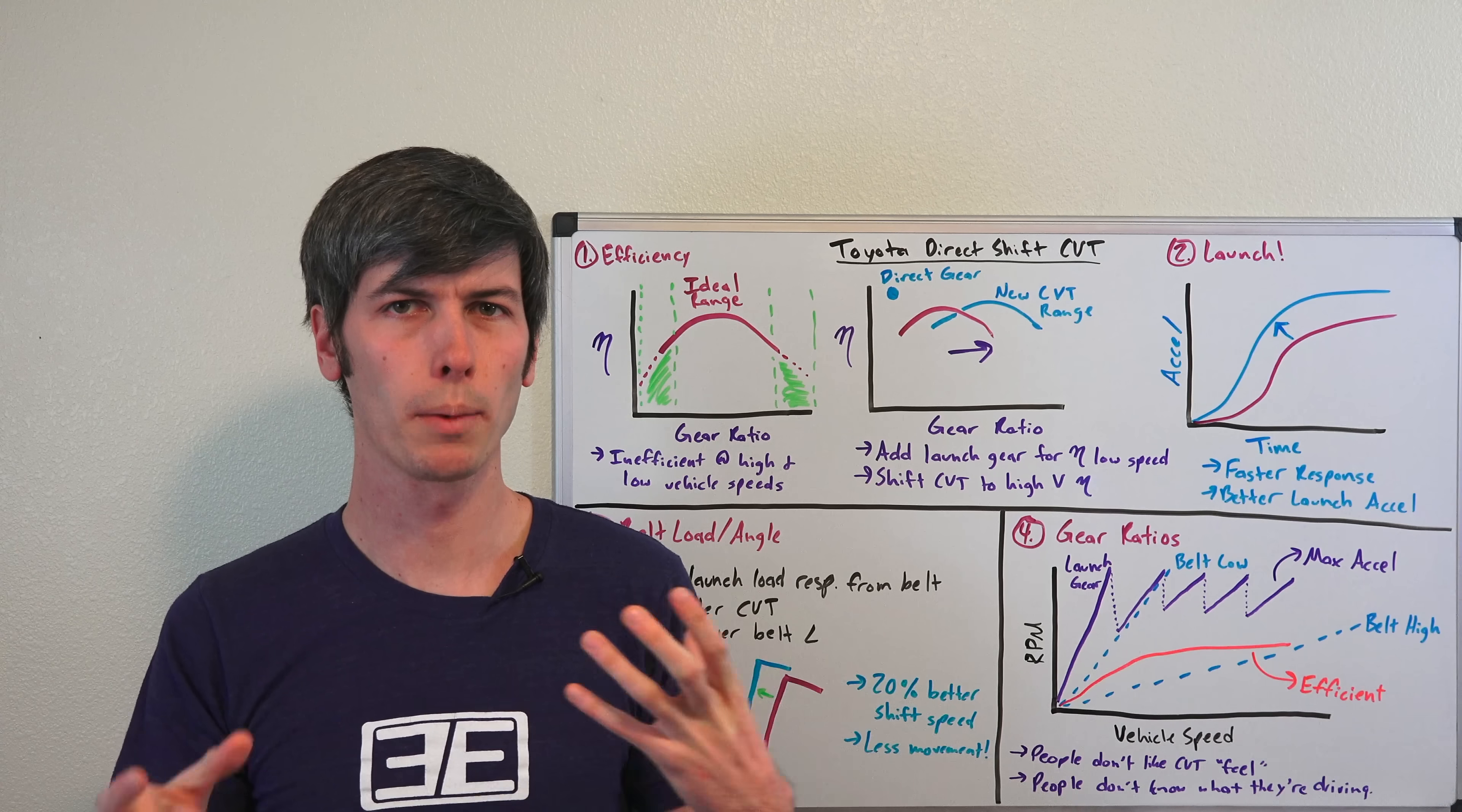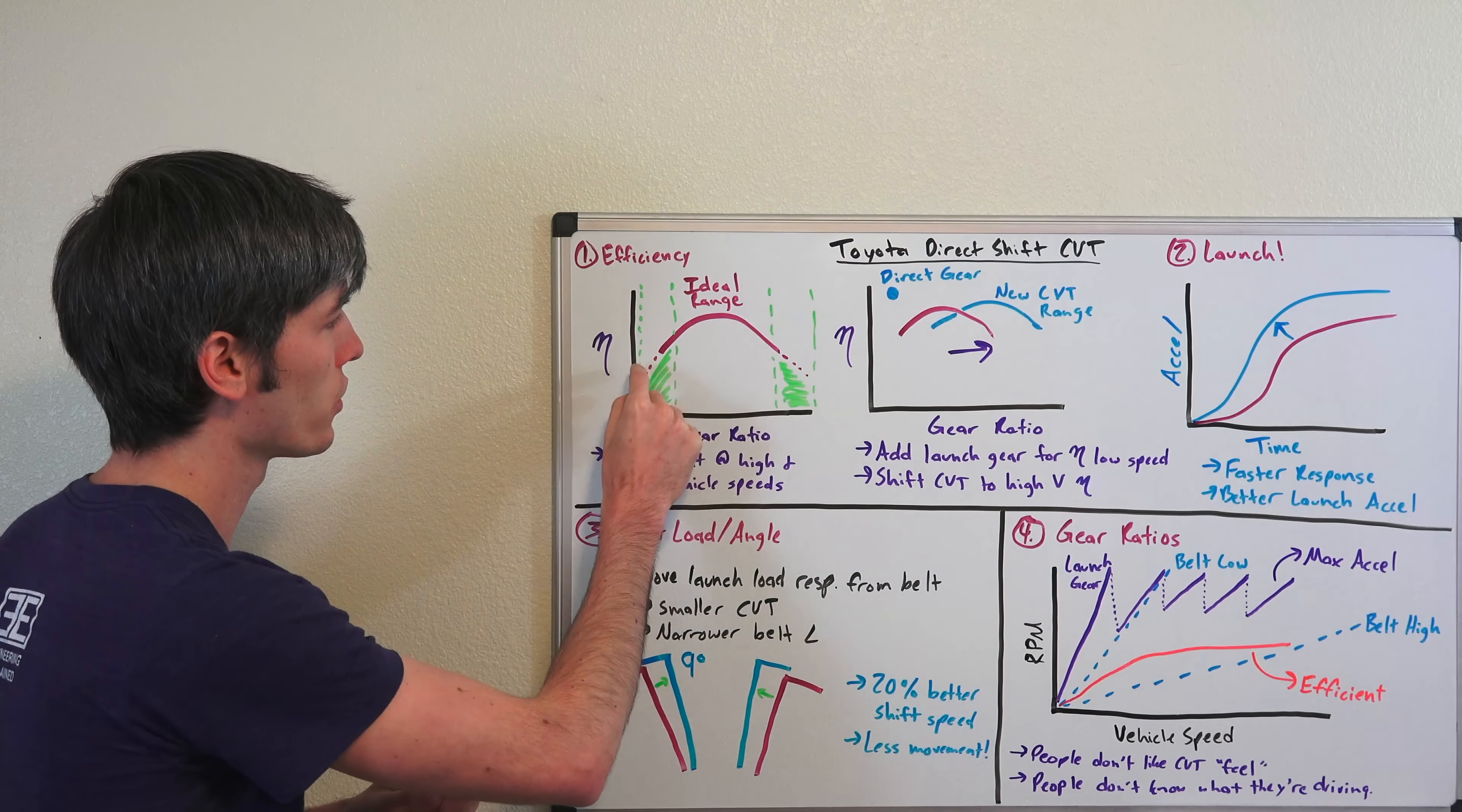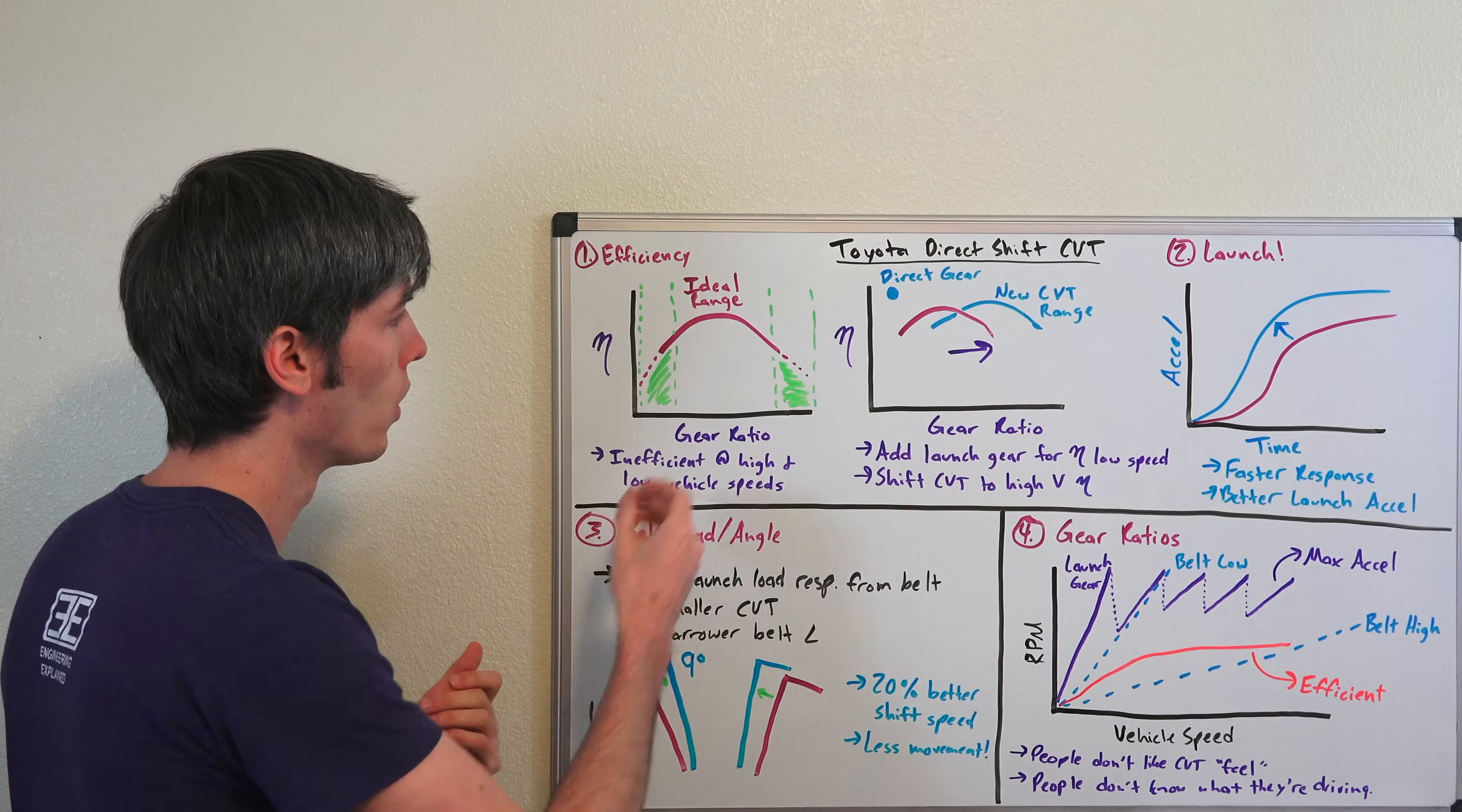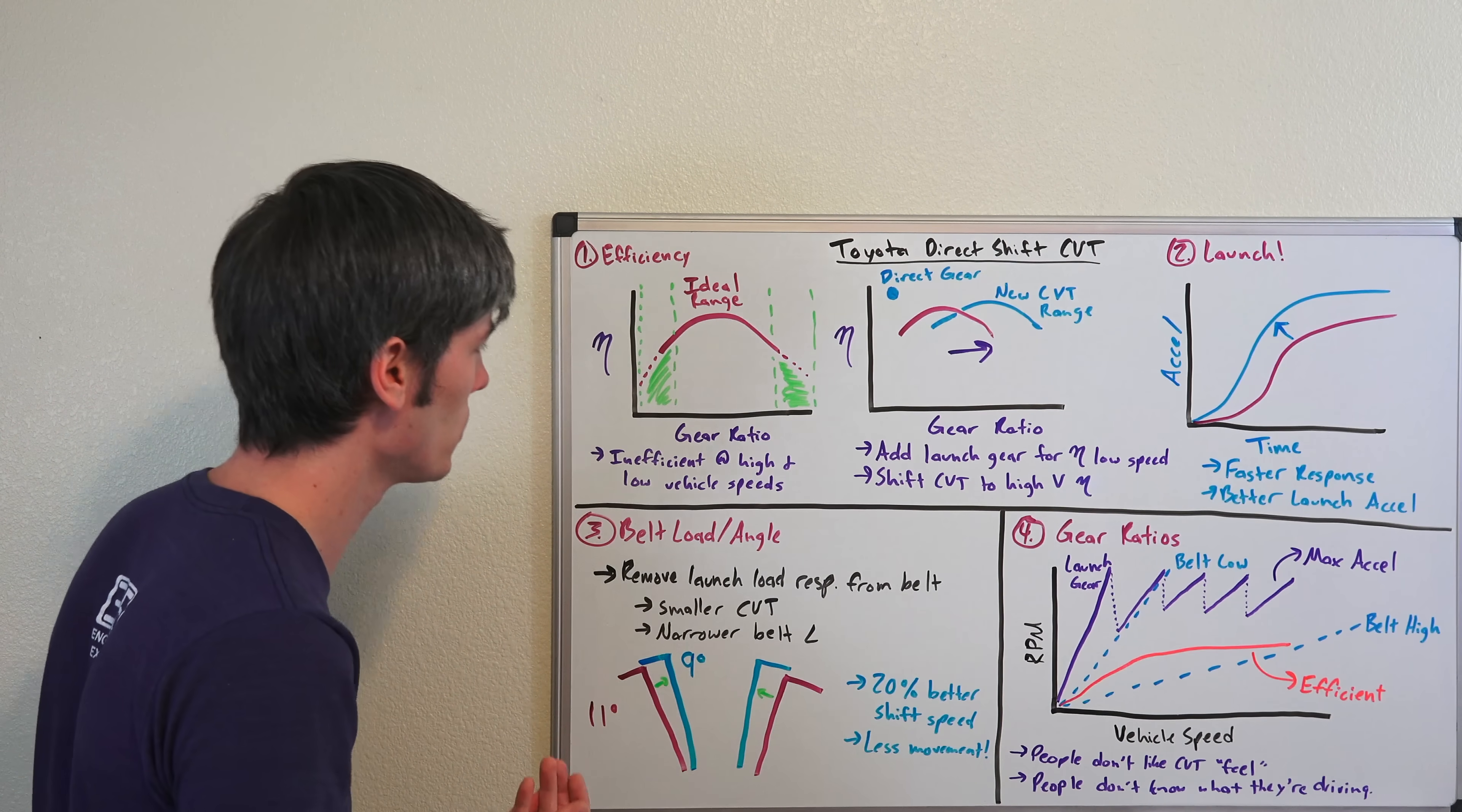Ideally, it's somewhere in the middle where both pulleys have a nice even large radius for that belt to go around, and it's in a happy efficient range. And as you get to the extremes, meaning if you're at a very low speed requesting a very high gear ratio, or at a very high speed requesting a very low gear ratio, then you're going to be in an inefficient range of that CVT.